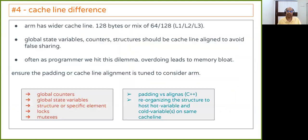The fourth tip: mind your cache line. ARM has a bigger cache line — most ARM processors have a 128-byte cache line, though some have a mix where L1/L2 may be 64 bytes and L3 is 128 bytes. Your software may be tuned for 64-byte cache lines or have hardcoded padding for 64 bytes. Make sure it is updated to consider 128 bytes, especially for global counters, global state variables, structures, locks, and mutexes. In C++, you can use alignas; reorganizing structures helps reduce memory bloat.